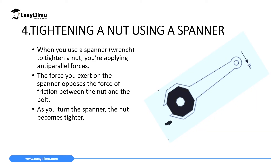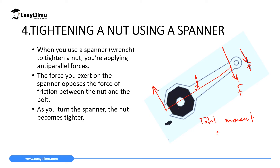Another application is tightening a nut using a spanner. When you place a spanner on a nut and apply a force F downward on one side, the spanner on the right side moves up with the same force. Your hand pushes the spanner down on one side while the other side moves up in the opposite direction with the same force. If you know the distance between the two sides and one of the forces, you can calculate the total moment as F times the distance, giving you the moment in newton meters.